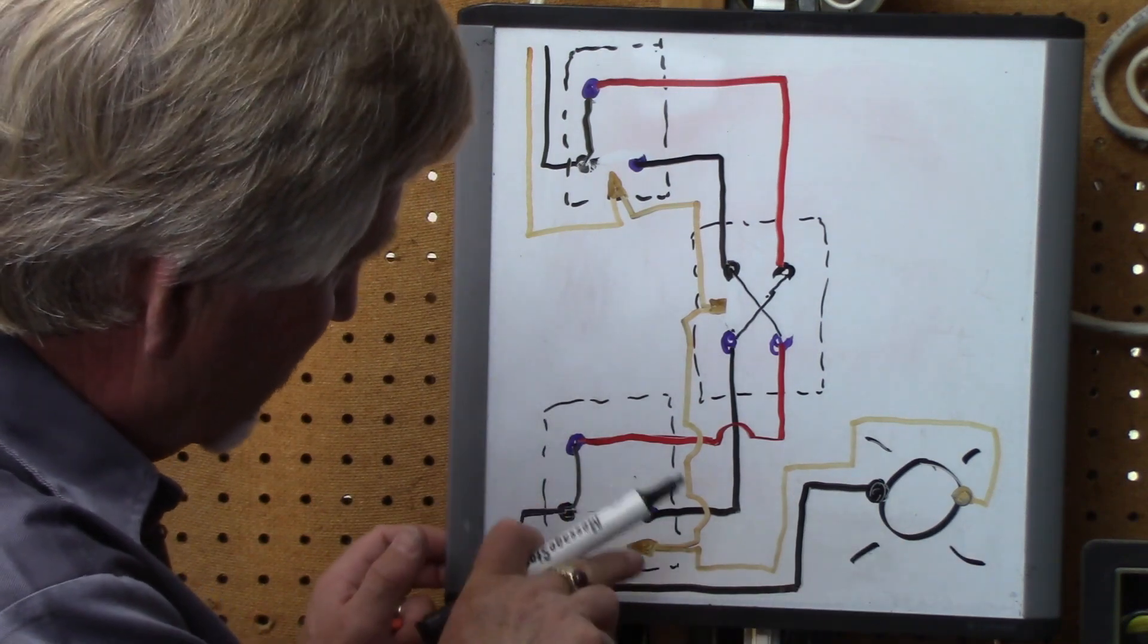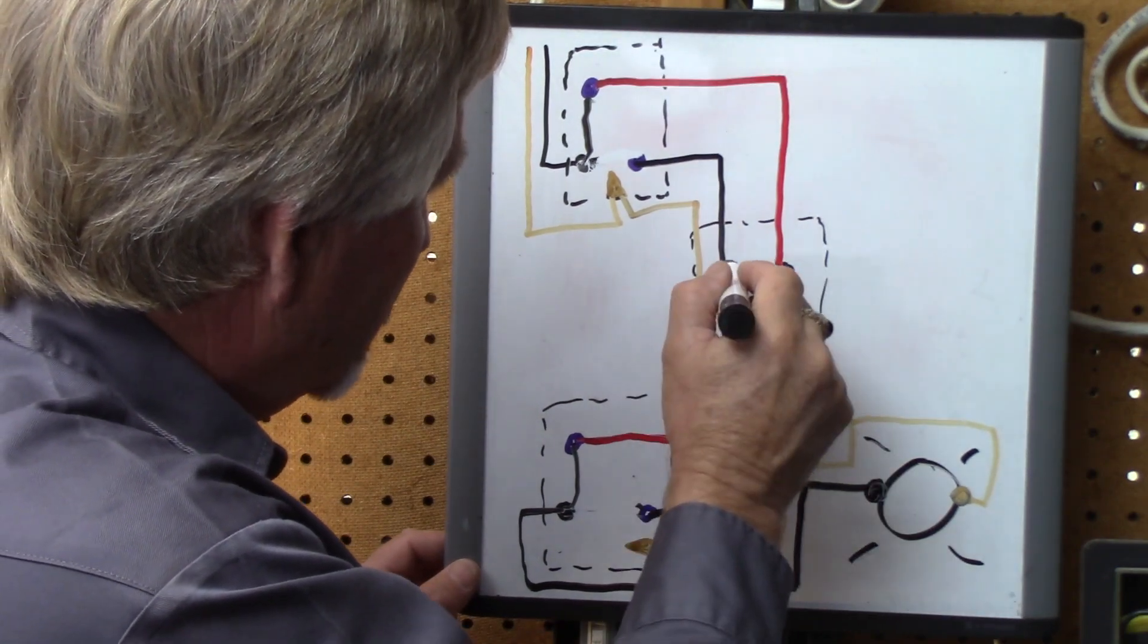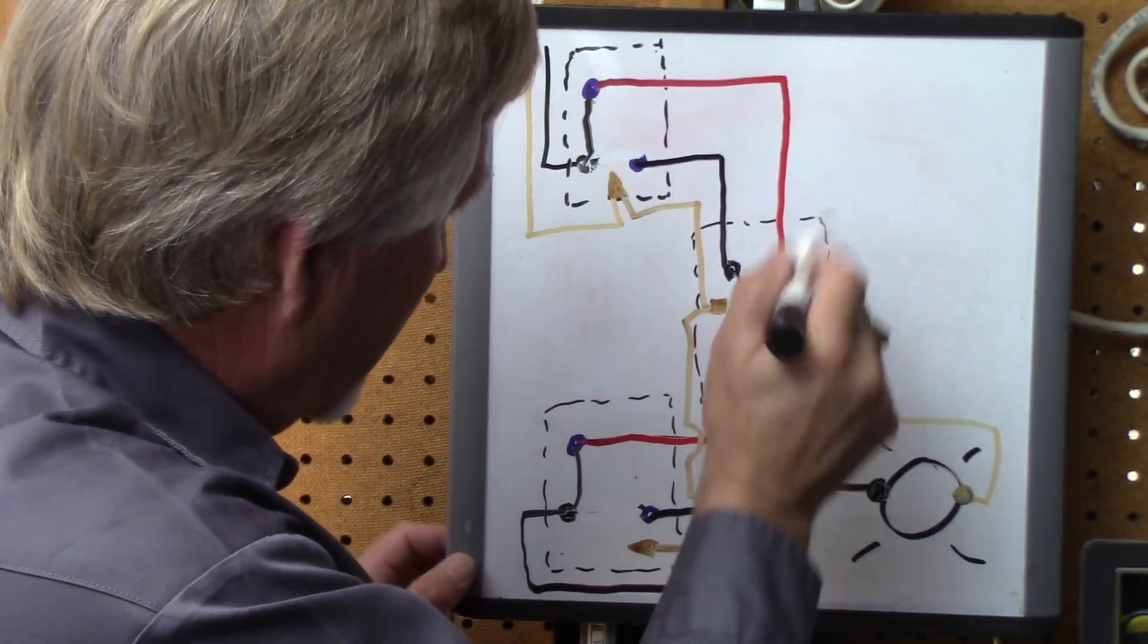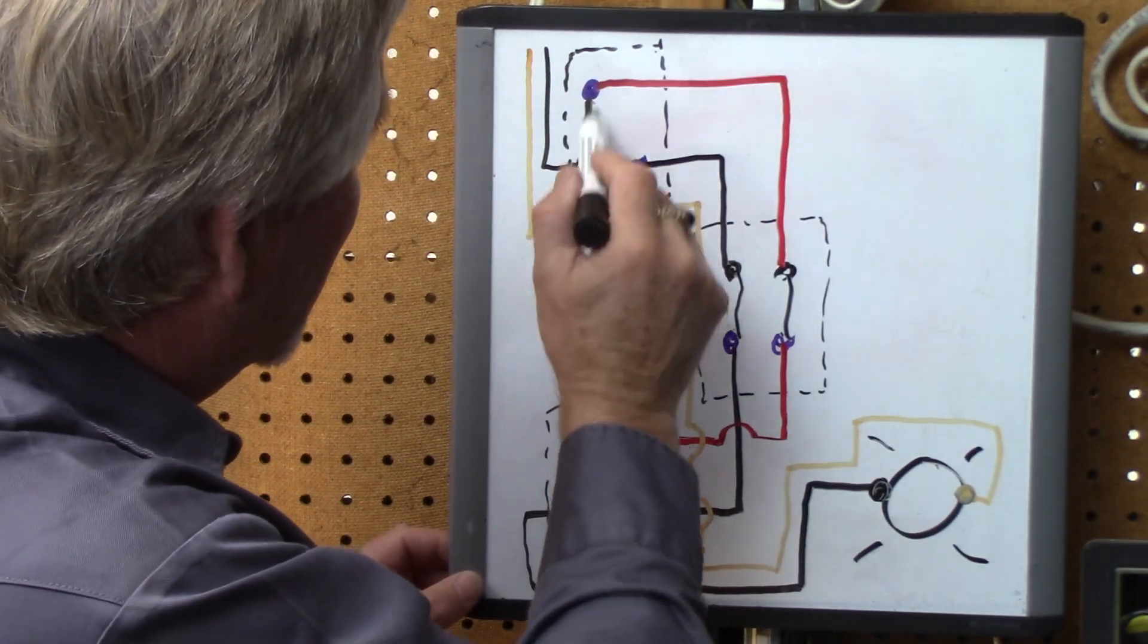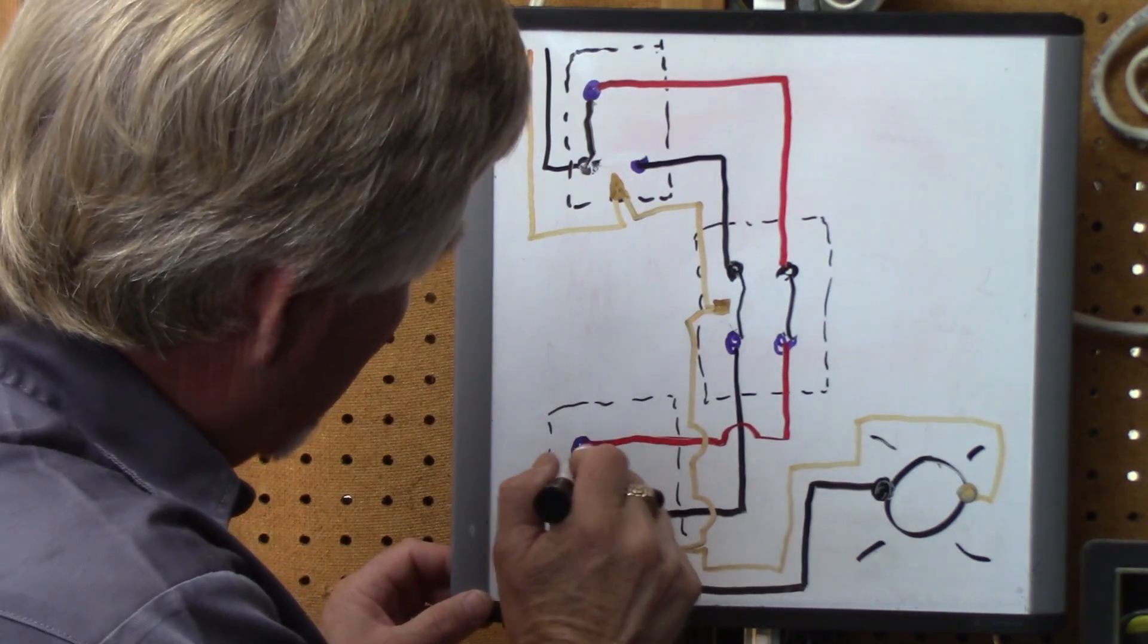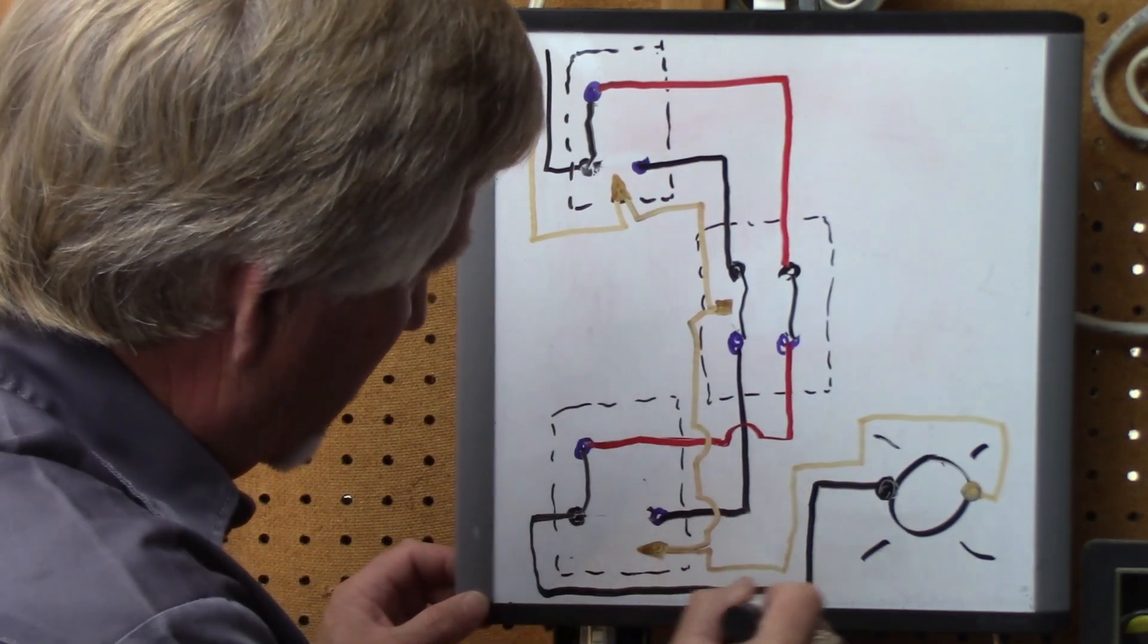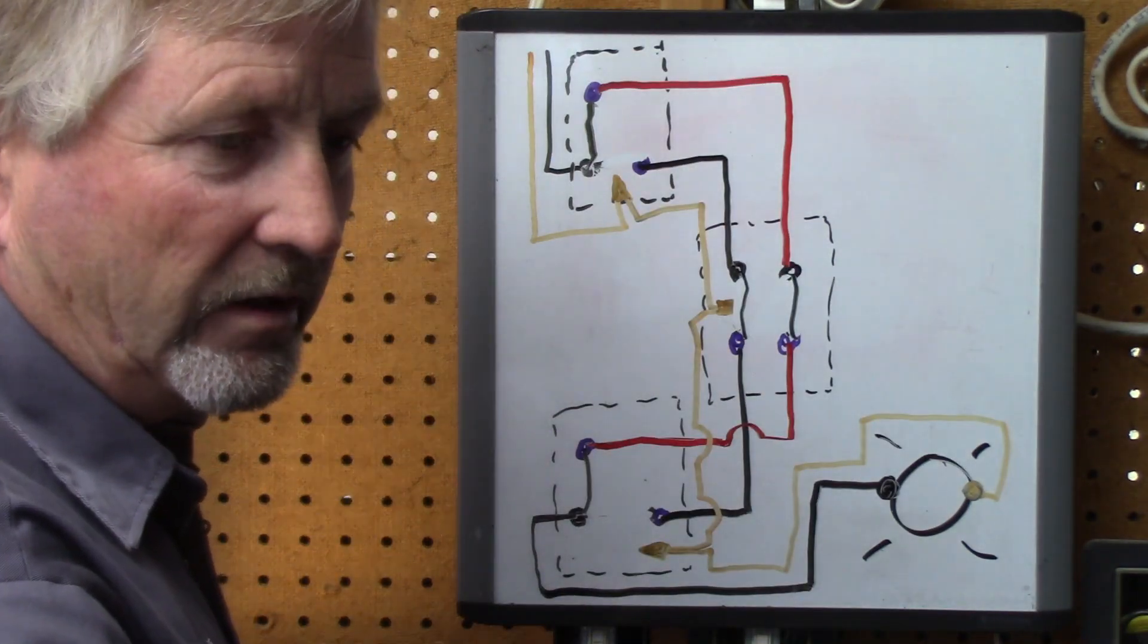Till you switch. Either that switch. Or you come back to our 4-way. The star of today's show. And they turn it back the other direction. Now power in. Through the common. To the traveler. Straight through the 4-way. Onto this common of this 3-way. Over to the common. And the light is on. Again, switching any one of these will turn it off.